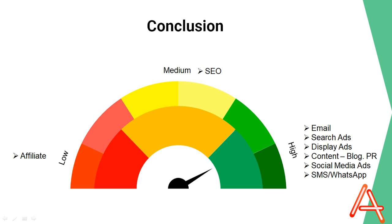The fifth channel that a company should prioritize is SMS and WhatsApp marketing. As discussed, SMS and WhatsApp marketing have a high reach, build strong relationships with customers, offer real-time customer service, and are one of the lowest-cost marketing channels. The next channel to focus on is search engine optimization, which is important for increasing your website's visibility and attracting more traffic. However, it can take time to see results, which is why it's a medium priority.